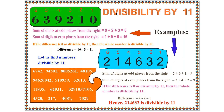Now let us move towards divisibility by 11. The number is 639210. We assign each digit a place number from the right: position 1, 2, 3, 4, 5, and 6. You can number from the right side or the left side; I have done it from the right side. We then sum the digits at the odd places and separately sum the digits at the even places.